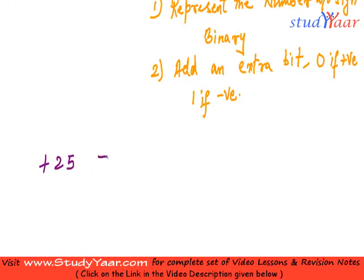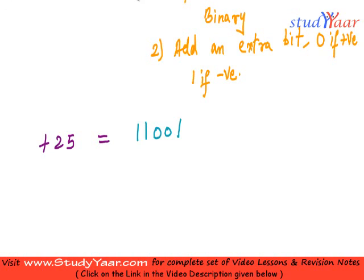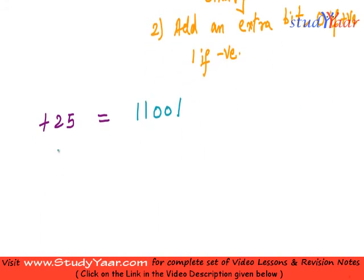For +25, first represent 25 in binary. 25 in binary is 1 1 0 0 1. That's 2 raised to 4 (16) plus 2 raised to 3 (8) equals 24, plus 2 raised to 0 (1) equals 25. Next, add an extra bit — since the number is positive, add a 0 to the left. So +25 is represented as 0 1 1 0 0 1.